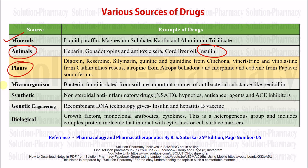Microorganisms are agents which cannot be seen by the naked eye. Because of microorganisms, we obtain many beneficial drugs. Bacteria, fungi, and different microorganisms isolated from the soil are very important sources of antibiotics. Apart from antibiotics, we can also get different enzymes and erythropoietin substances, which are used for the production of erythrocytes, i.e., red blood cells.